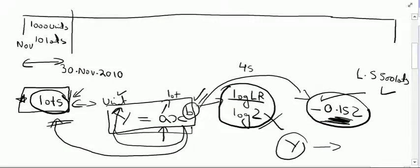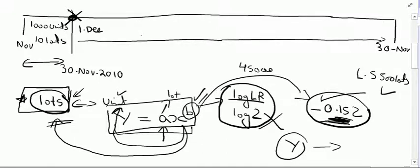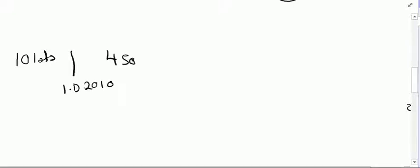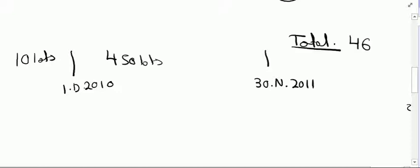Let us solve Option 1 — selling 45,000 units. The relevant year runs from 1st December 2010 to 30th November 2011. Drawing the timeline: 10 lots were already produced before 1st December 2010, and during the next year 45,000 units (equivalent to 450 lots) will be sold. In total, 460 lots will have been produced up to 30th November 2011.